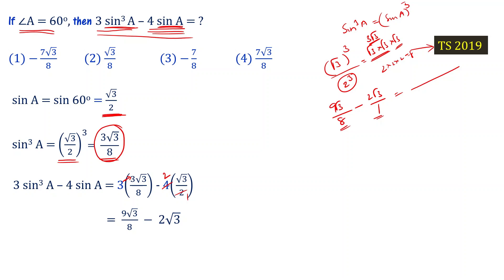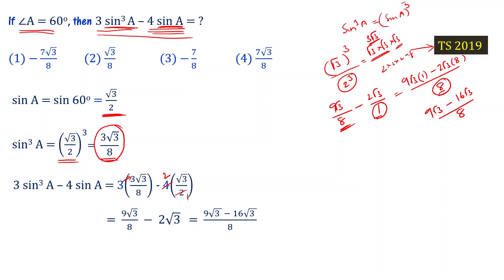The denominators are 8 and 1, so the LCD is 8. We get 9 root 3 minus 16 root 3, all divided by 8. Taking root 3 as common: root 3 times 9 minus 16 divided by 8, which equals negative 7 root 3 divided by 8. So choice 1 is the answer.